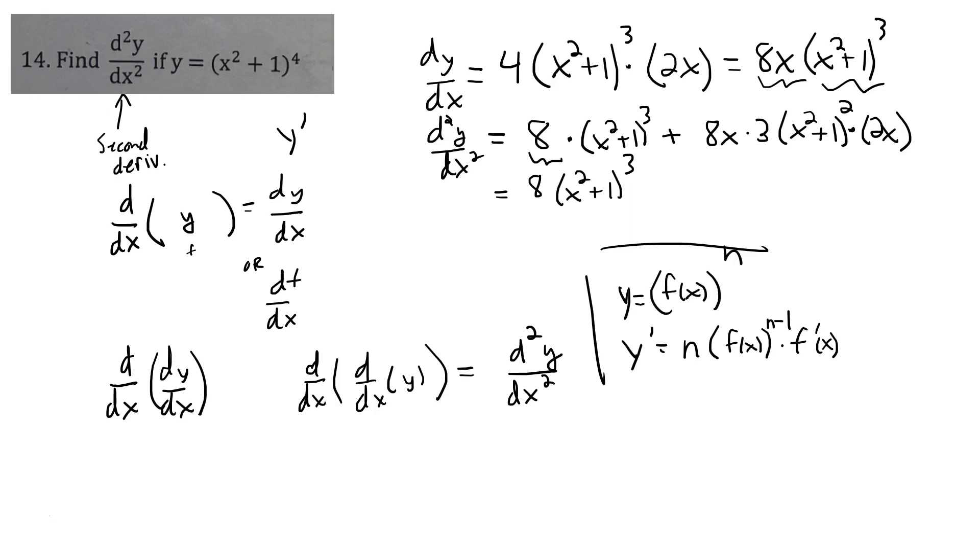And gosh, there's a lot going on there. So an 8, a 3, and a 2. 8 times 6 is 48. An x, and x is x squared times x squared plus 1 quantity squared. We could simplify this, but this is our second derivative here. d squared y dx squared.